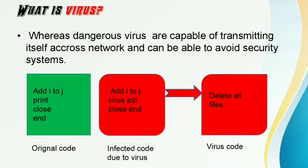Dangerous viruses are capable of transmitting themselves across a network and can avoid security systems. For example, the original code is: add i to j, print, close, and end. But the virus-infected code is: add i to j, virus job, close, and end. Here, the virus job is to delete all the files.